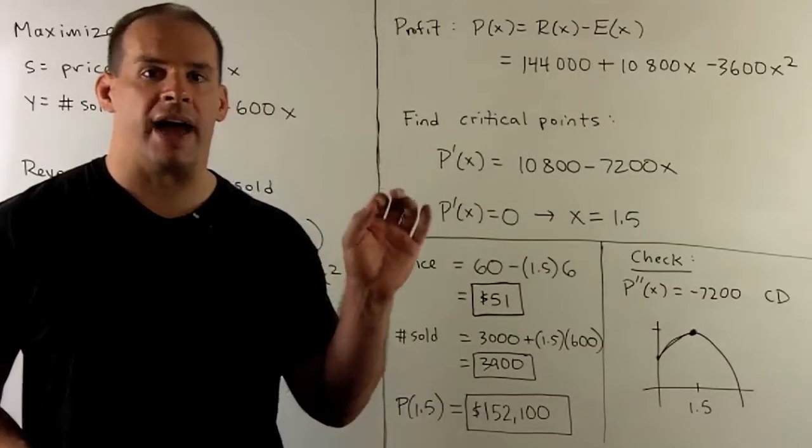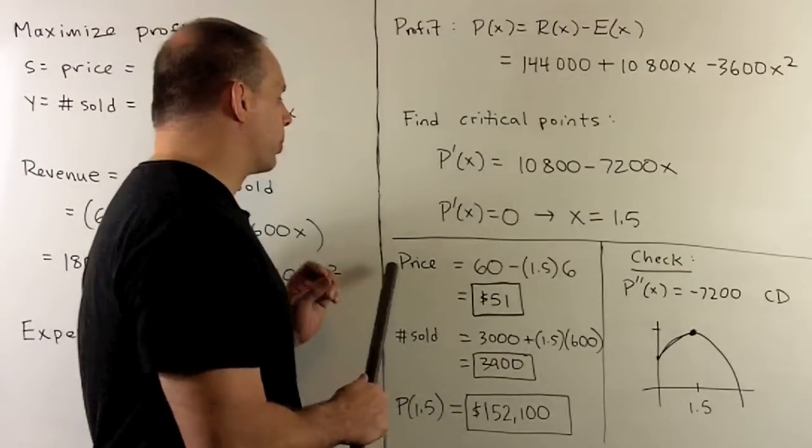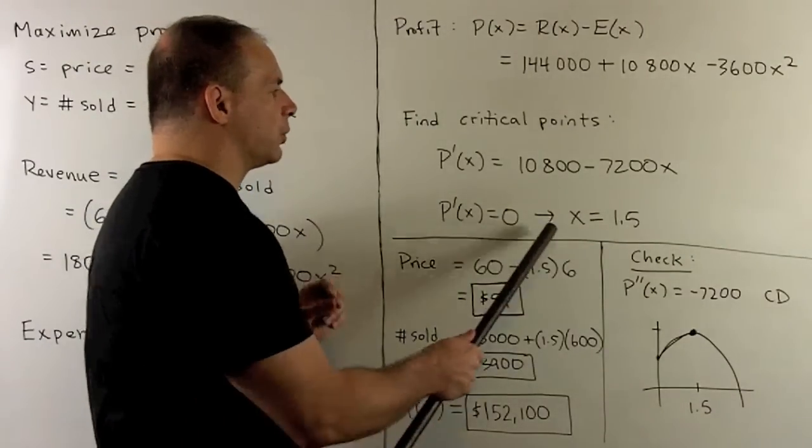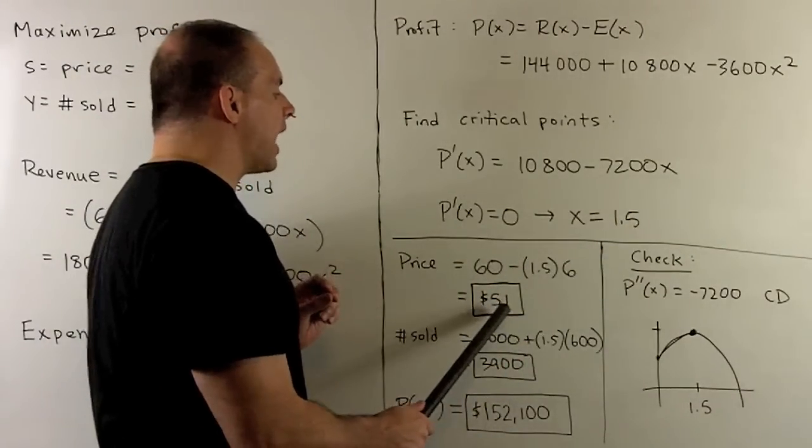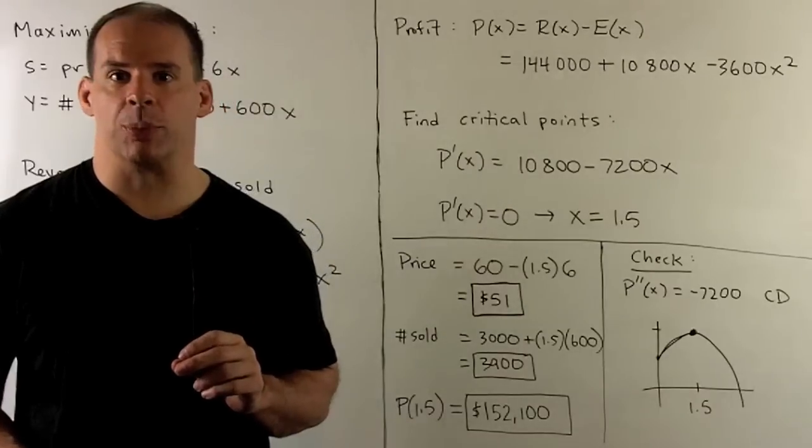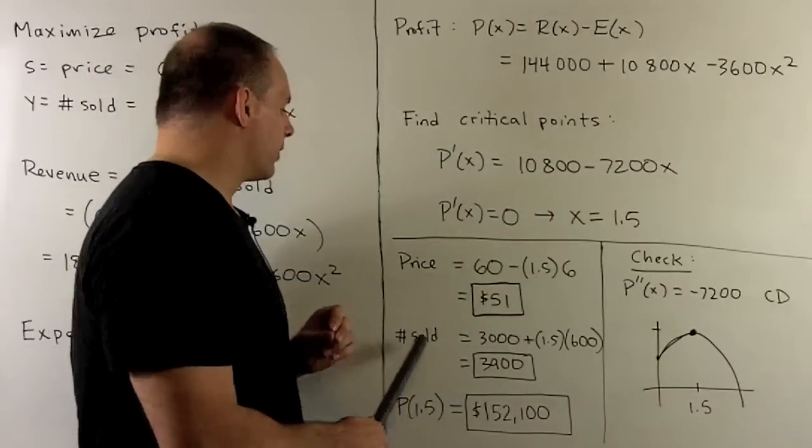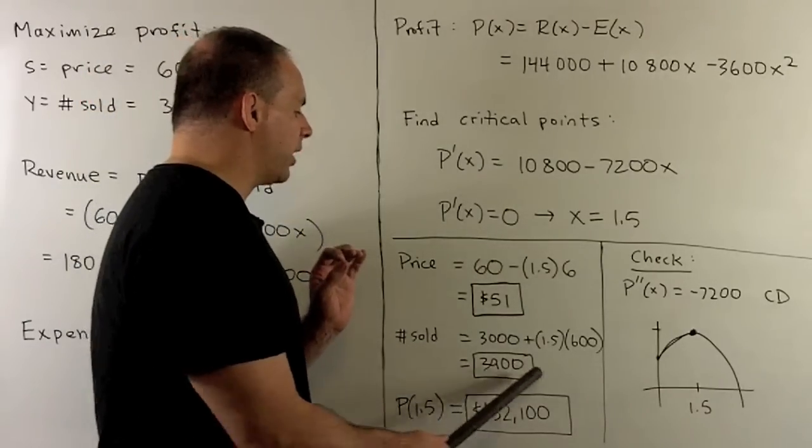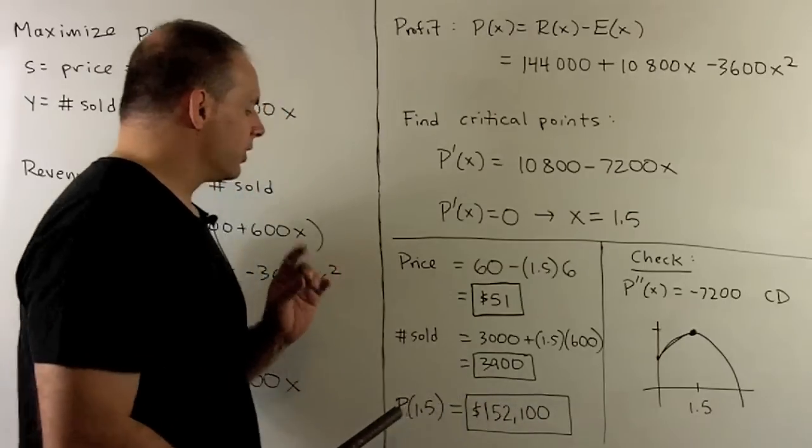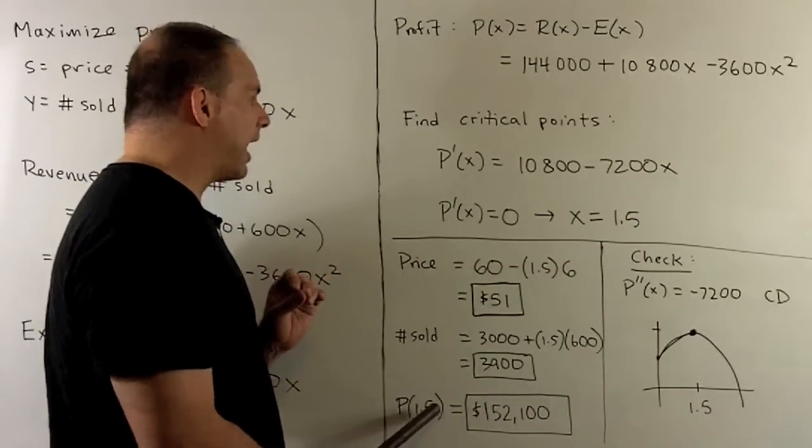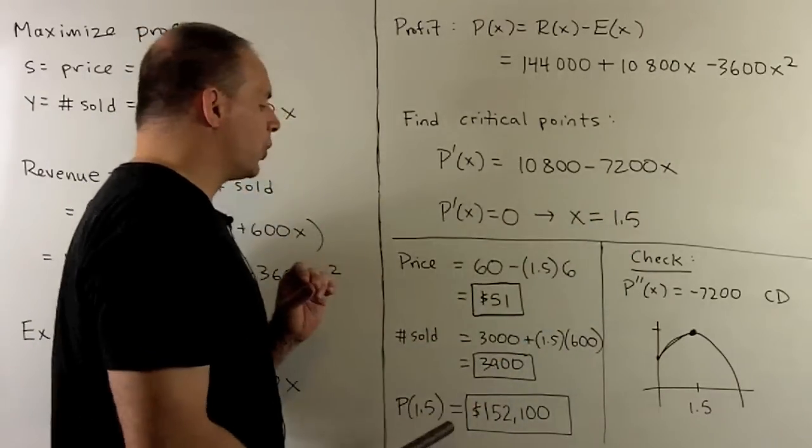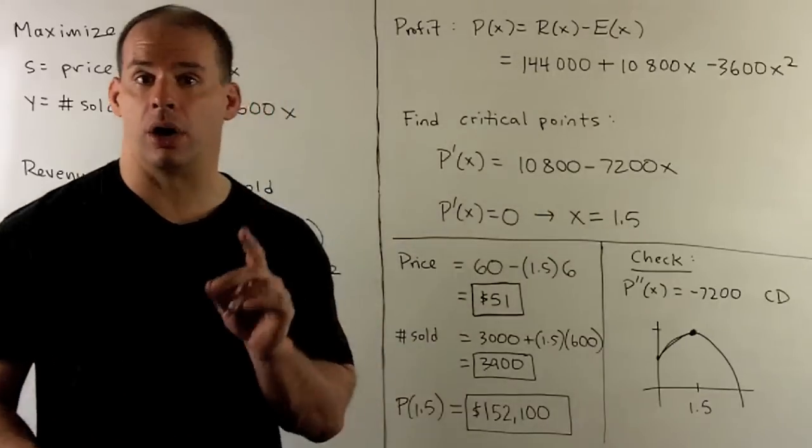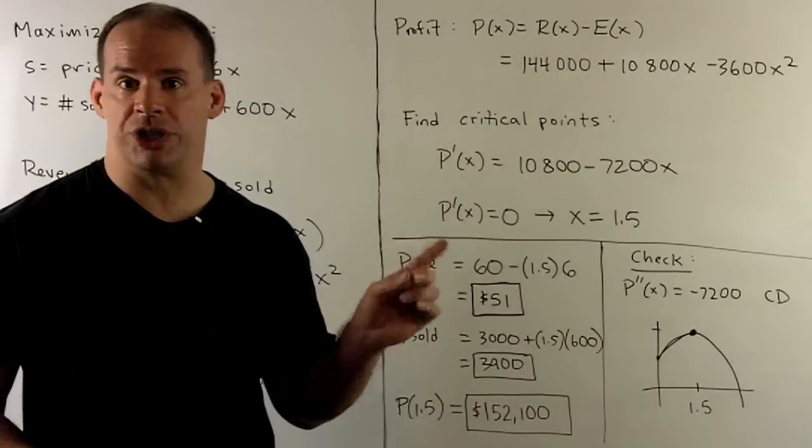Now let's find our values. For the price, at X equal to one-half, I'm going to get $51. That agrees with what we had in the previous board. The number of tickets sold will be 3,900 tickets. The profit at X equal to one-half is $152,100. So again, our previous board checks that.